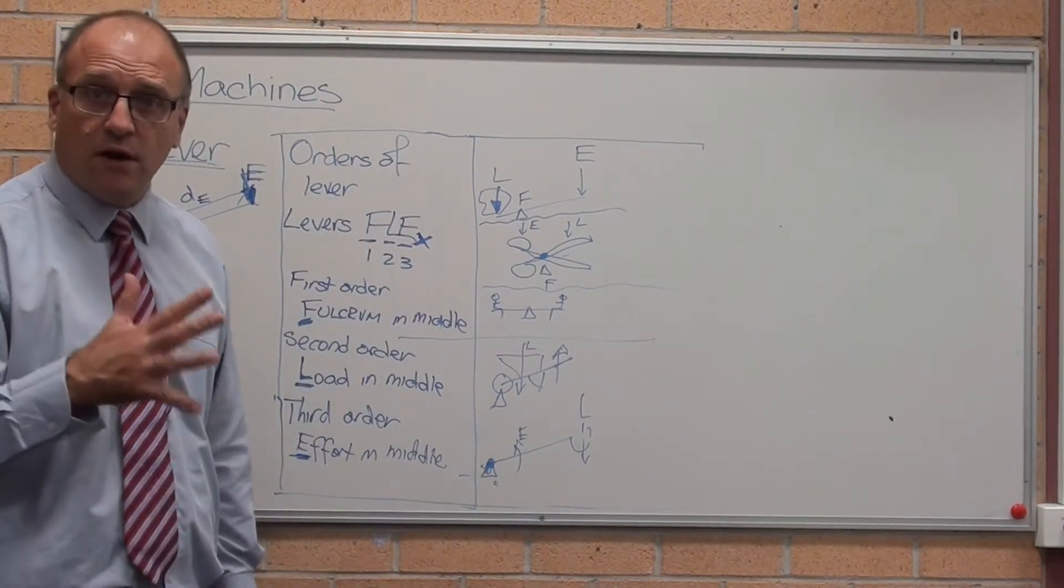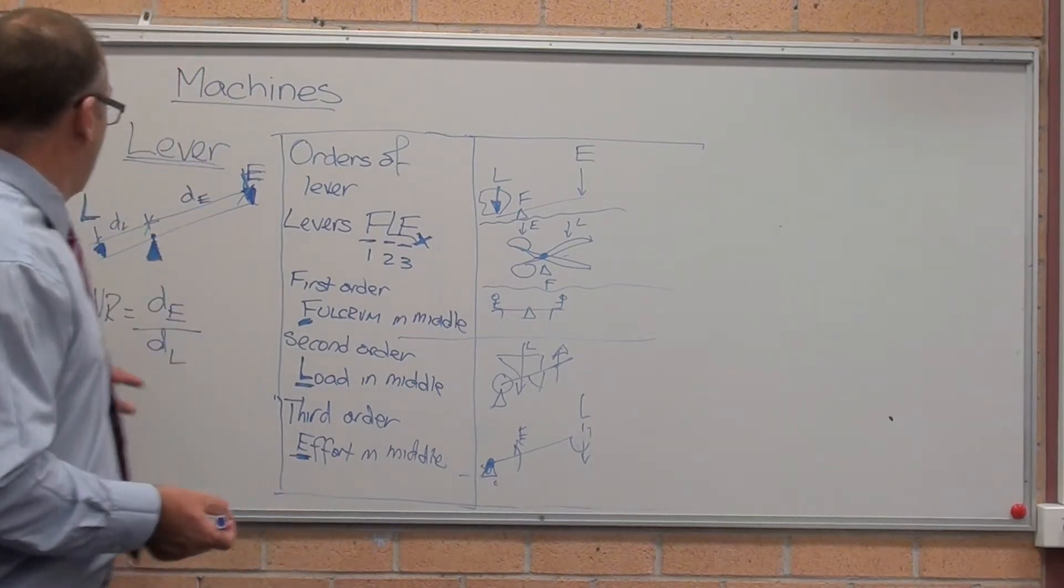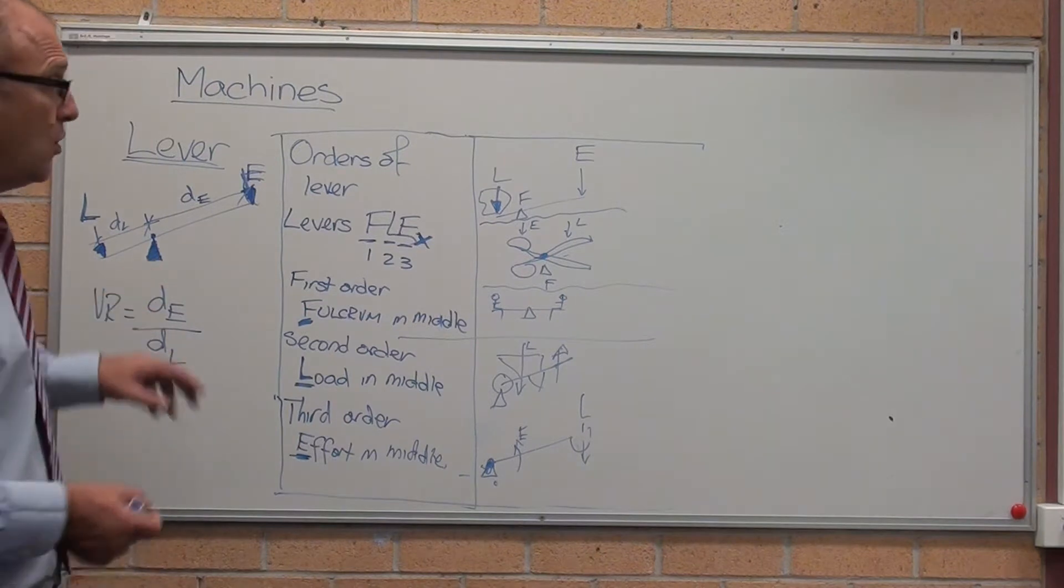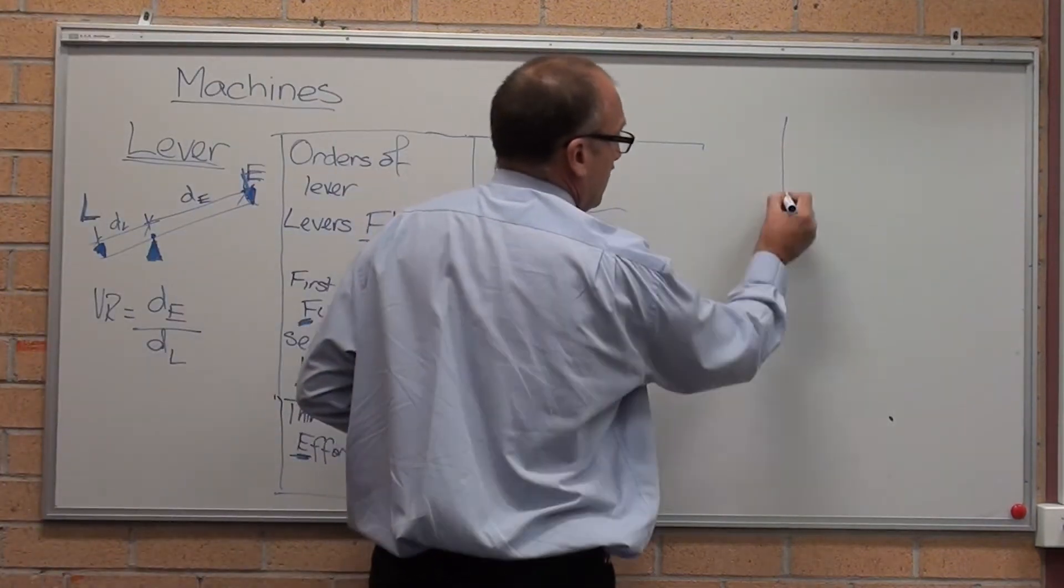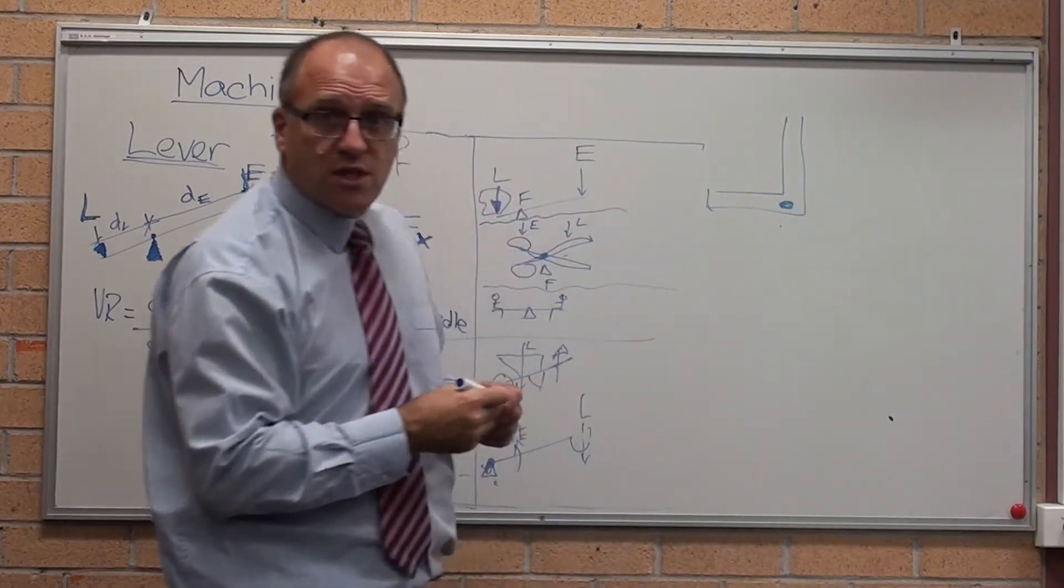Just really quickly, looking at the five simple machines, the first one is levers. A lever is basically a straight arm, or a bent arm like so, with a pivot point somewhere in it.